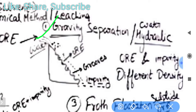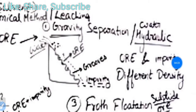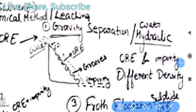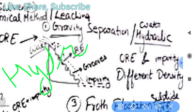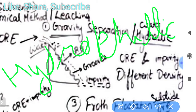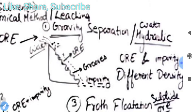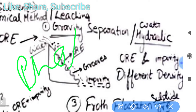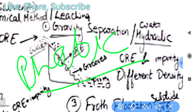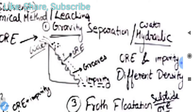Gravity separation is mainly based on two types of properties: hydrophobic or hydrophilic nature. Hydrophilic means loving water — 'philic' means loving — so if an ore is hydrophilic it loves water. Hydrophobic comes from 'phobia,' meaning it wants to leave the water. So hydrophobic and hydrophilic properties determine how the ore and impurities behave in this method.